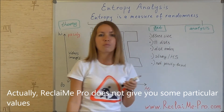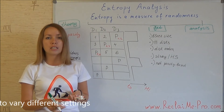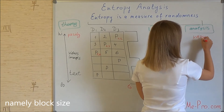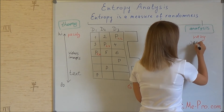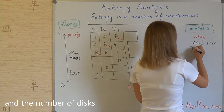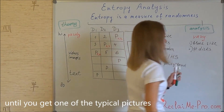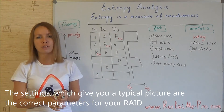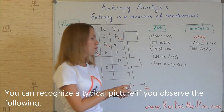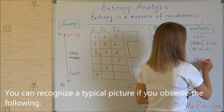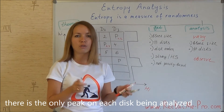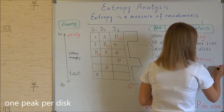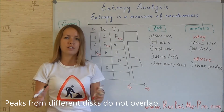ReclaiMe Pro does not give you particular values directly. Instead, you need to vary different settings — namely the block size and the number of disks — until you get one of the typical pictures. The settings which give you the typical pictures are the correct parameters for your RAID. You can recognize the typical pictures if you observe the following: there is only one peak on each disk being analyzed, and peaks from different disks do not overlap.